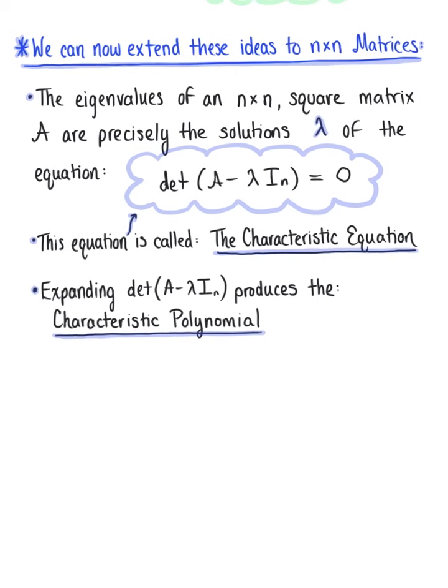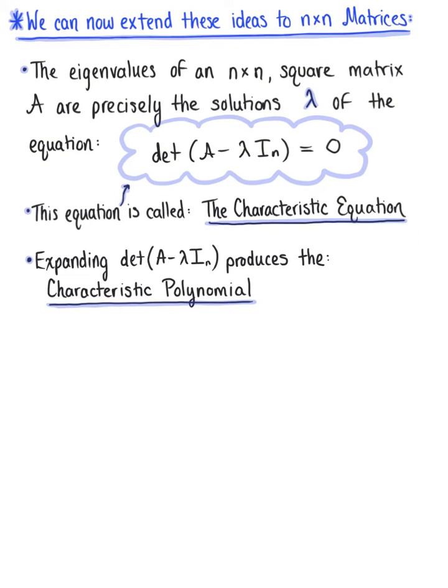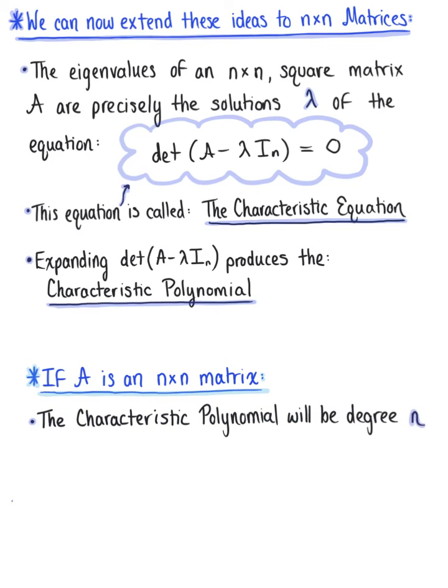If A is an n by n matrix, the characteristic polynomial will be degree n.